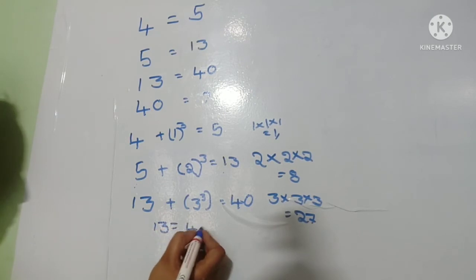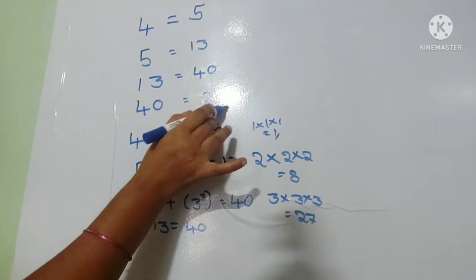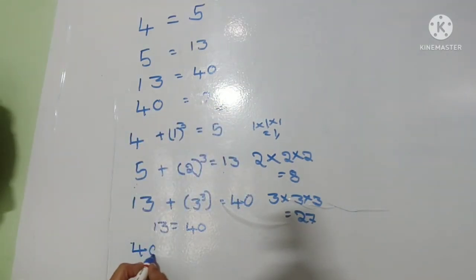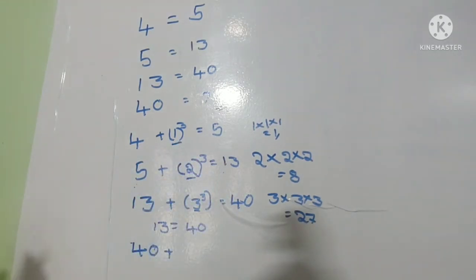Thirteen equals forty, okay. Next, forty equals how much? So forty plus: one here, it is two, it is three, so it means one increases. Next, now again four. Four cube.